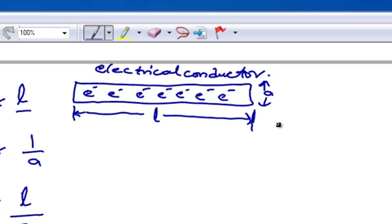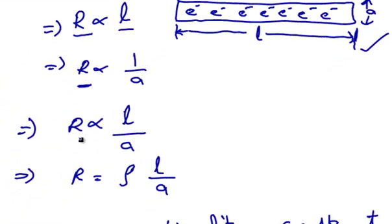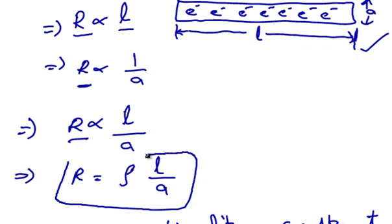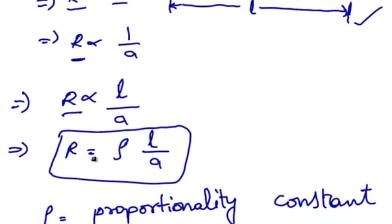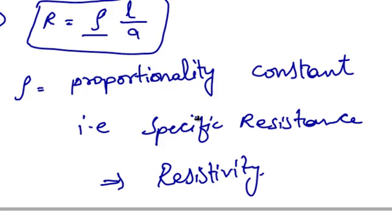It can be represented in the following diagram. We know that R is directly proportional to L by A, so R is equal to rho into L by A, where rho is the proportionality constant — that is, rho is the specific resistance or resistivity.